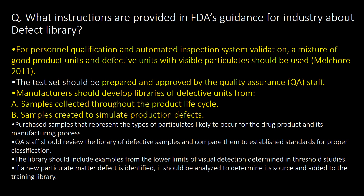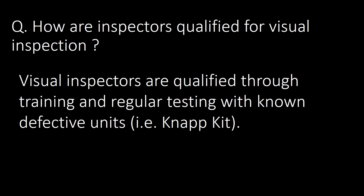What instructions are provided in FDA guidance for industry about the defect library? For personnel qualification and automated inspection system validation, a mixture of good product units and defective units with visible particulates should be used. Visual inspectors are qualified through training and regular testing with non-defective units, i.e. the NAP kit.